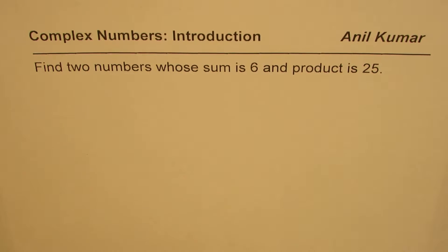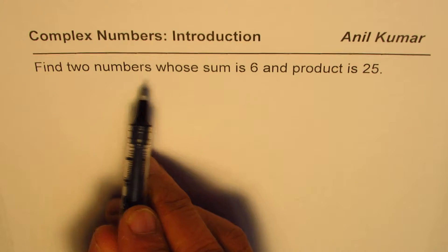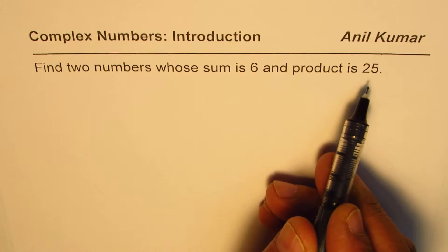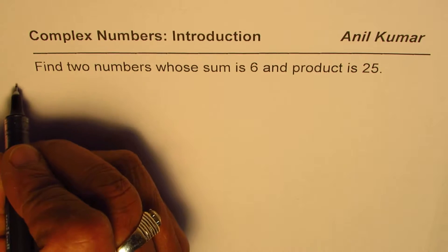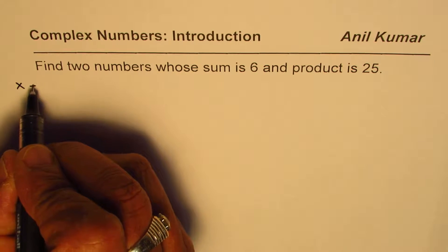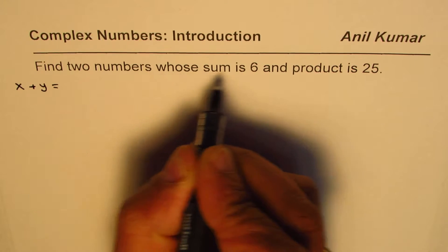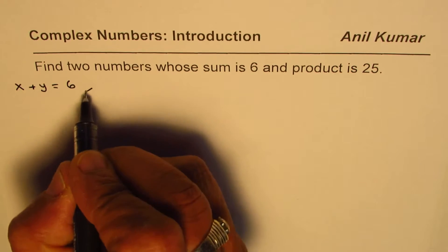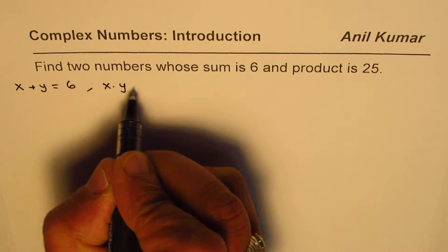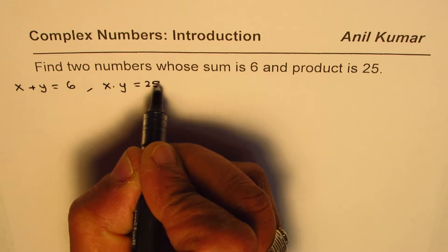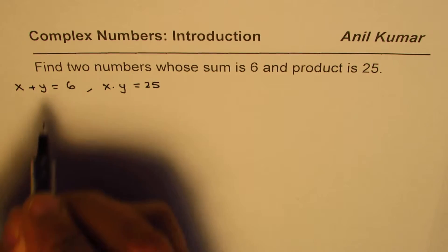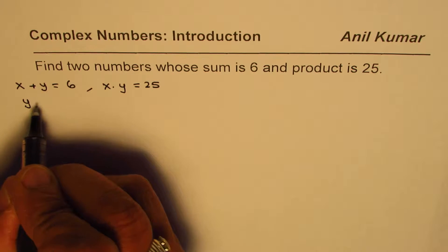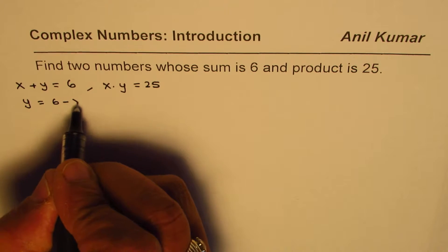The question here is: find two numbers whose sum is 6 and product is 25. So let us say the two numbers are x and y. Then x plus y equals 6, and the product x times y equals 25. We have to find these two numbers. We can write one number in terms of the other: y equals 6 minus x.